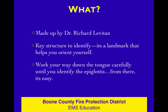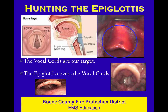Dr. Levitan is absolutely convinced that hunting for the epiglottis is the key thing we should worry about — it's the key structure to identify. It covers the glottic opening, and you need to work your way down the tongue methodically and carefully until you find the epiglottis. From there, it's a matter of a few more steps. The epiglottis is the floppy structure that covers your vocal cords when you swallow, keeping you from aspirating, and it is the key landmark we can almost always see on laryngoscopy.